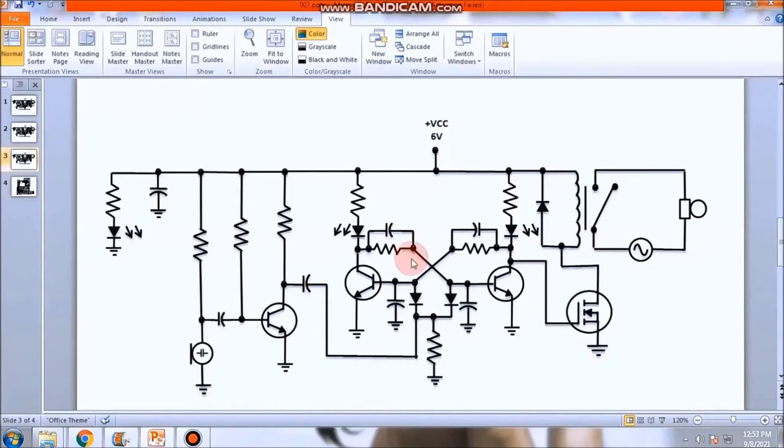So yan ang pinaka-circuit diagram. Ang ating input supply 6 volts - hindi siya 6 volts, 5 volts lang. 5 volts. Kasi power bank, power bank yung gamit natin. Itong dalawa dito yan ay power LED kulay-pula.